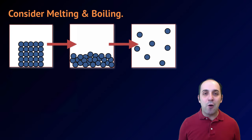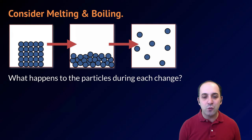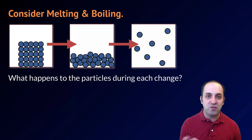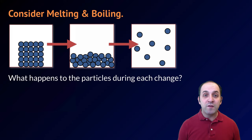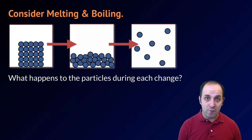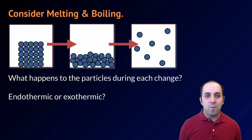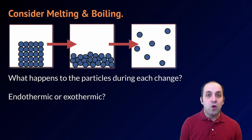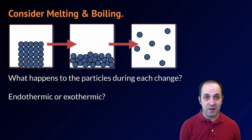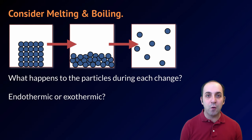Let's take a moment and think about melting and boiling. What's happening to the particles during each of these changes? Are the particles getting into more energetic configurations or less energetic configurations? Take a moment, write down your answer, and then answer this question: are these processes endothermic or exothermic? Do we have to put energy in to get this to happen, or do we have to remove energy? Pause the video and write down your answers.